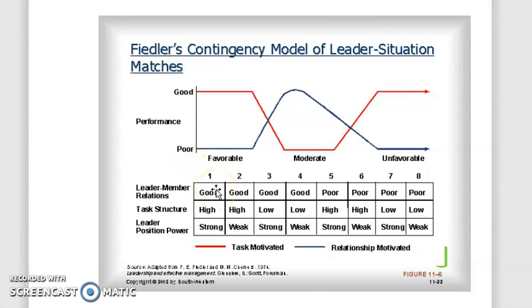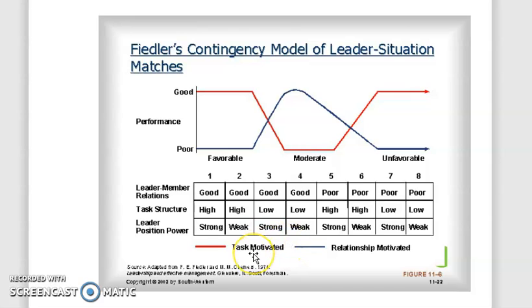Leader-member relations examines the degree of trust that group members place in the leader — the degree to which group members like the leader and are willing to accept the leader's behavior. A leader can be more effective if trusted by followers who are willing to accept their influence; if relationship and confidence are not earned, it becomes poor. Task structure is focused on the number of steps needed to complete the task — it measures the extent to which the task performed by the follower is routine or non-routine. If the task is clearly defined and routine, group members can be more easily held responsible for performance. 'S' refers to strong and 'W' refers to weak in this model.